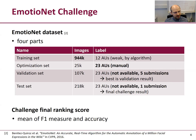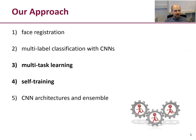The ranking of the challenge was done with the mean of the F1 measure and the accuracy. Now let's have a look at our approach. I will show you five aspects: first, the face registration; then multi-label classification with CNNs; then the two main novelties, which are a specific form of multitask learning and applying self-training; and last, the CNN architectures and the ensemble we use.